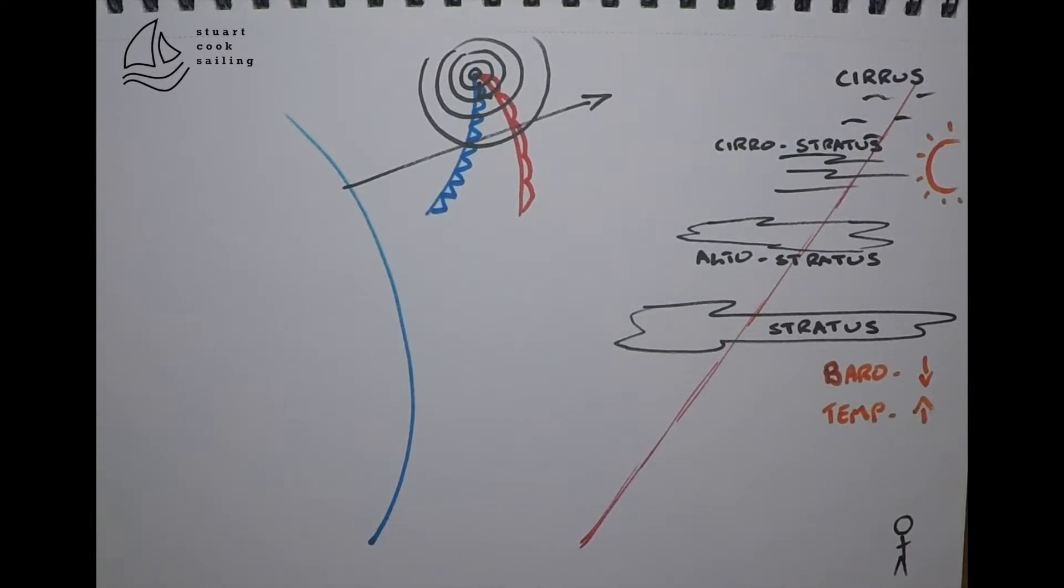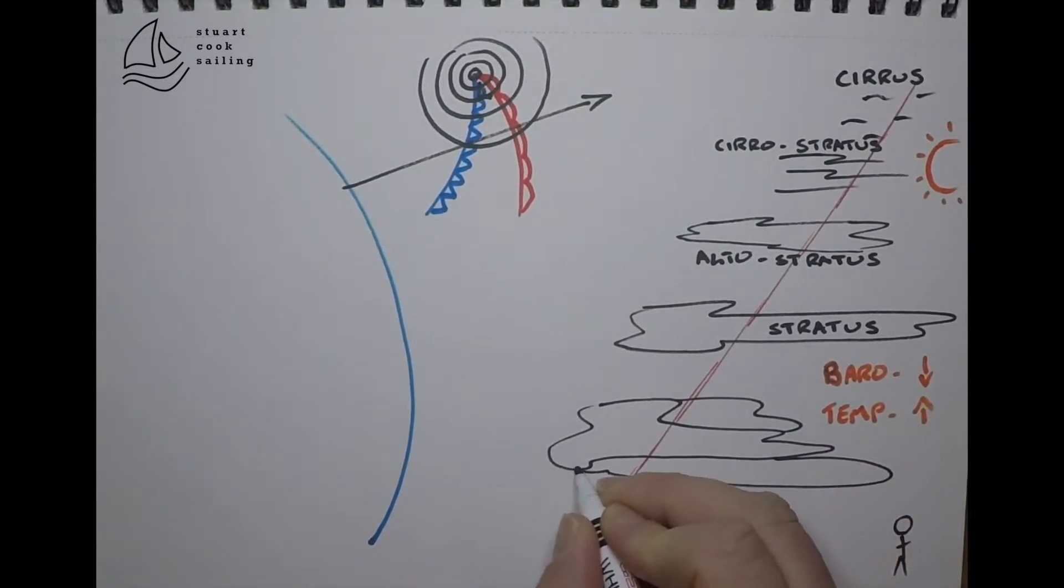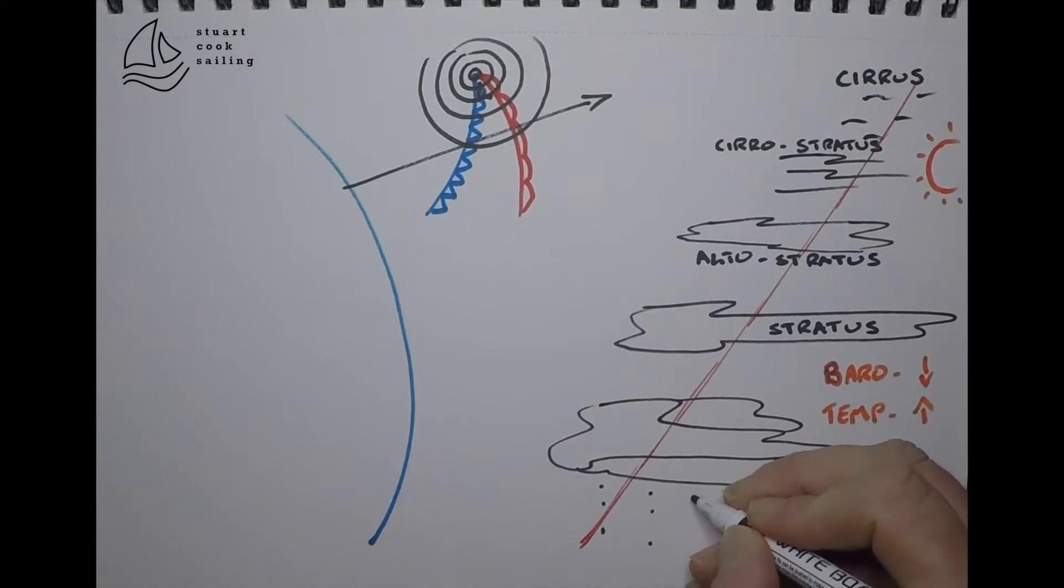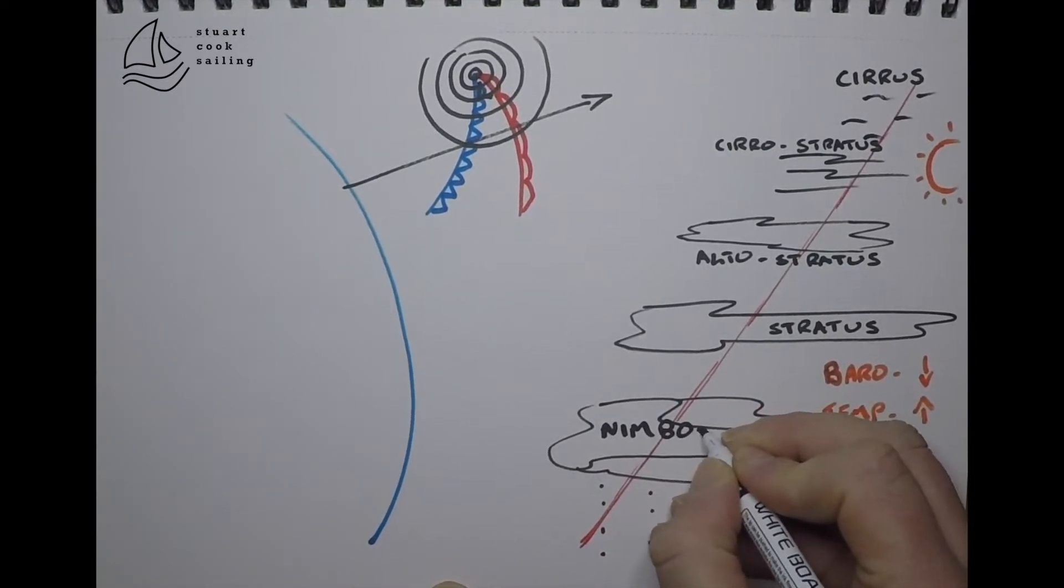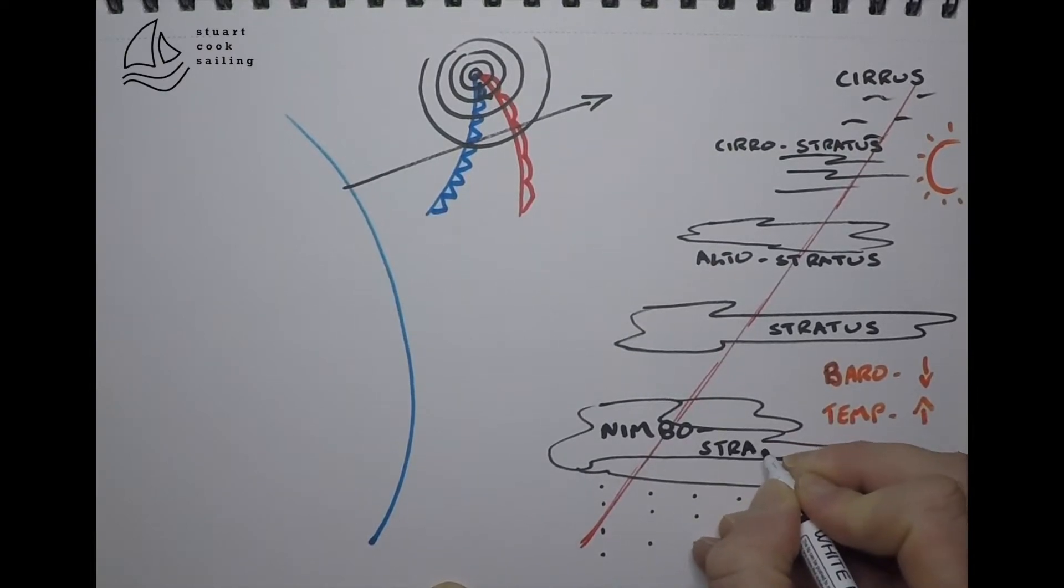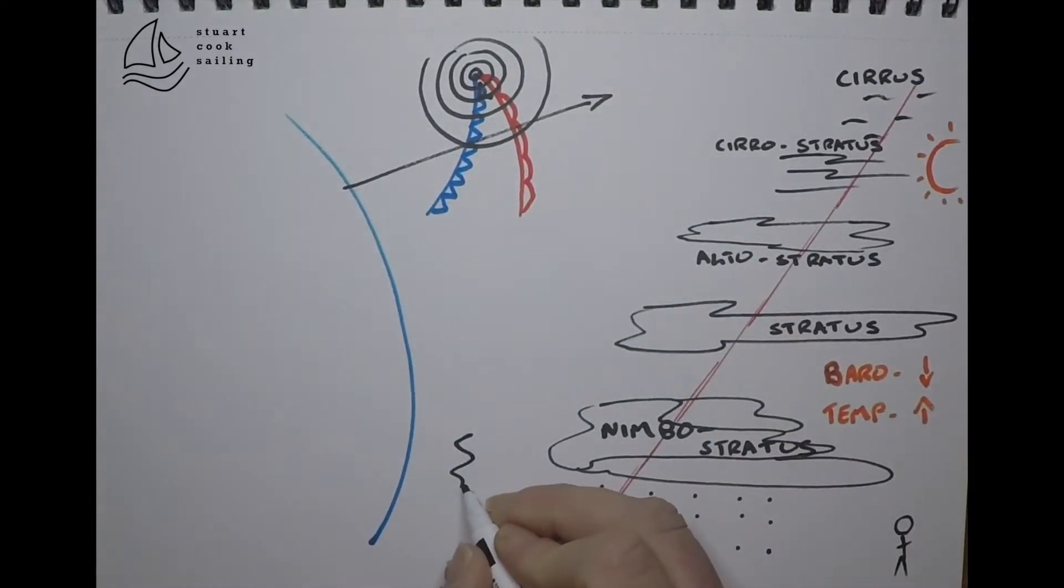Eventually, as we start to get the warm front passing over the top of us, our stratus cloud is going to turn into a much bigger layer cloud with a little bit of precipitation, kind of light but lengthy precipitation, giving us our nimbostratus.